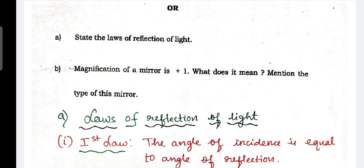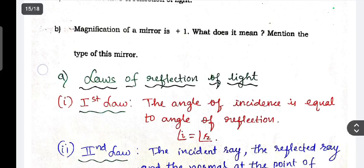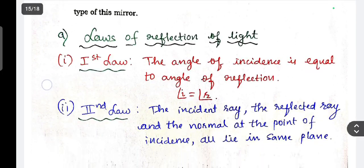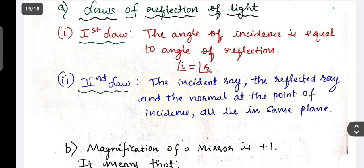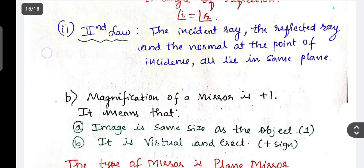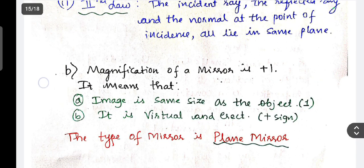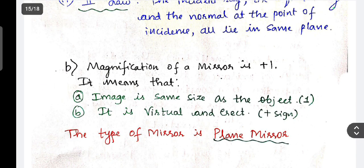Next question. State the law of reflection of light and magnification of mirror is plus 1. What does it mean? Mention the type of mirror. So this is law of reflection of light, first law and second law. Magnification of mirror is 1, it means that image is same size as the object. It is virtual and erect. The type of mirror is plane mirror.